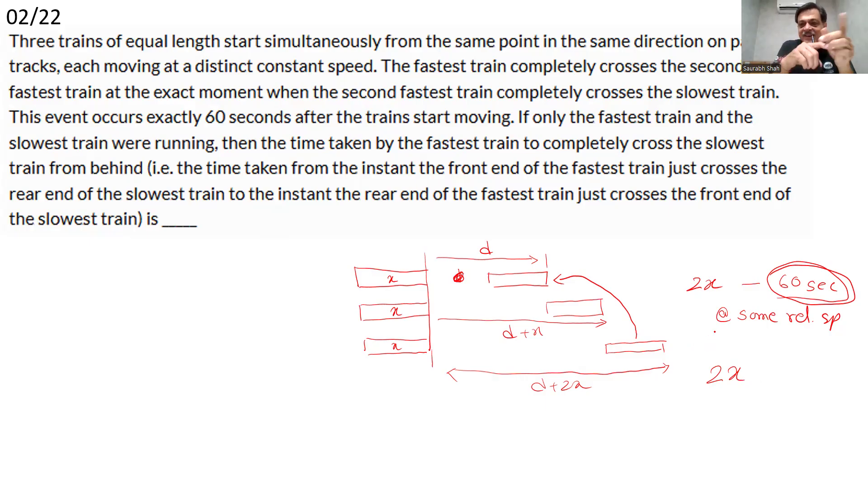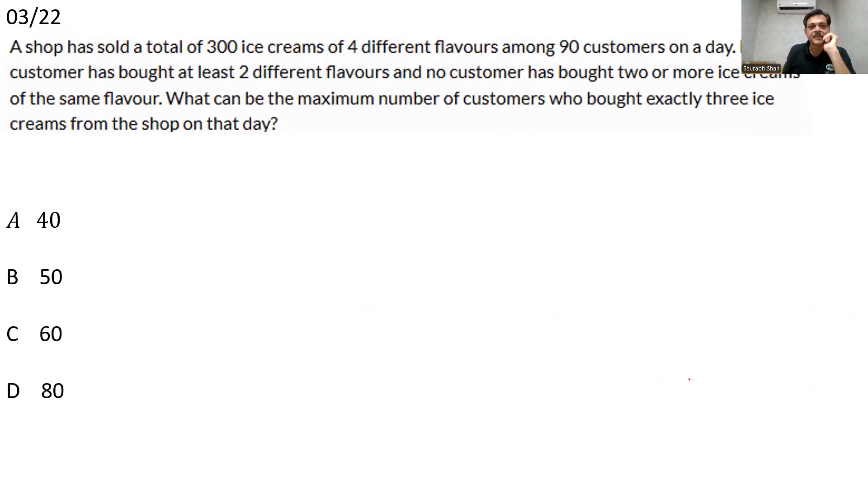60 seconds is directly the answer. To cross the slowest train, the fastest train will have to cover a distance of 2x at the relative speed, which is already 60 seconds. 60 seconds. So directly we can answer 60 seconds as the answer.